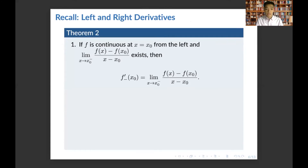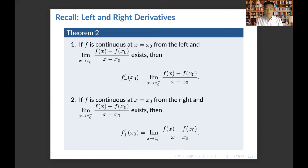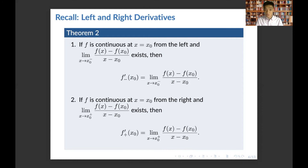We have a further theorem: if f is continuous at x0 from the left and the left-derivative limit exists, then we define the left derivative to be that limit. Similarly, if f is continuous at x0 from the right and the right-derivative limit exists, we define the right derivative to be that limit. The relevance is: to prove differentiability at a point, you must first show continuity at that point — first the continuity test, then the differentiability test.